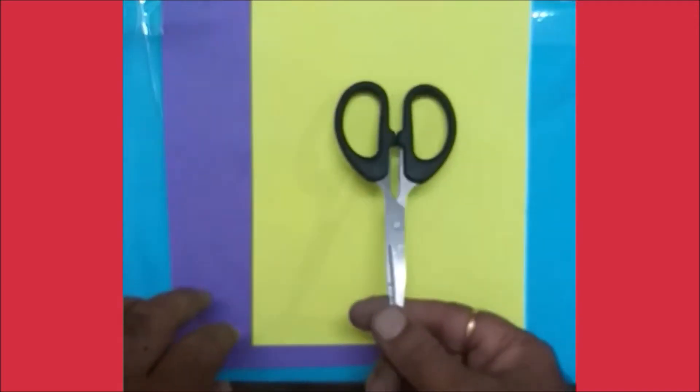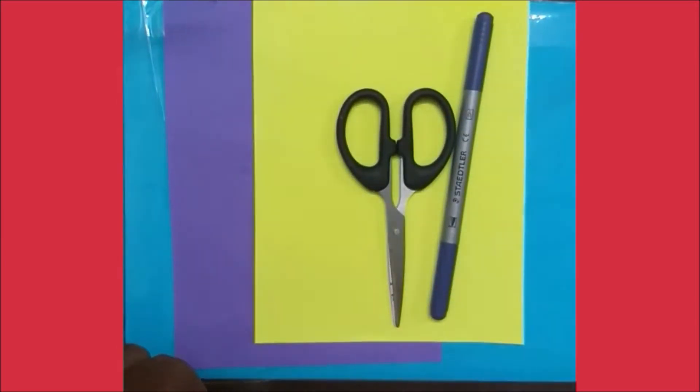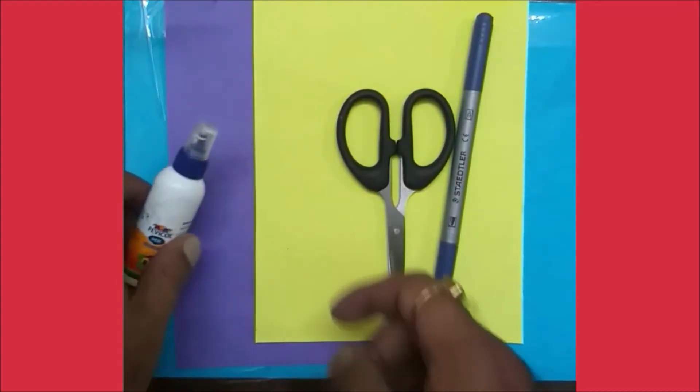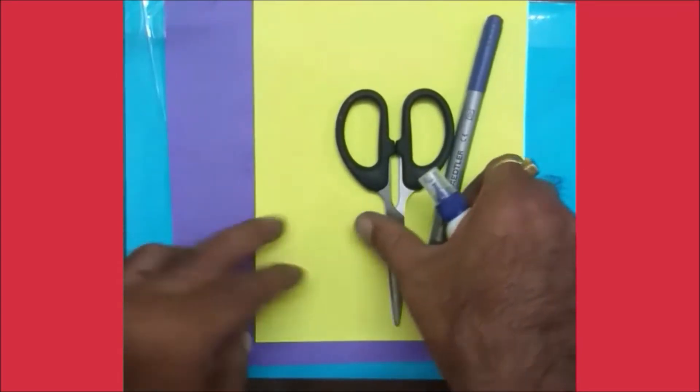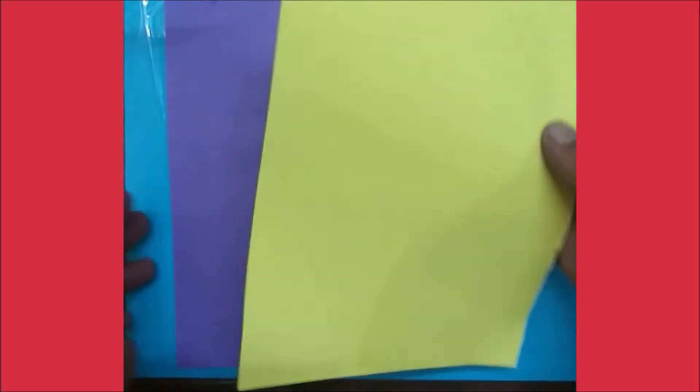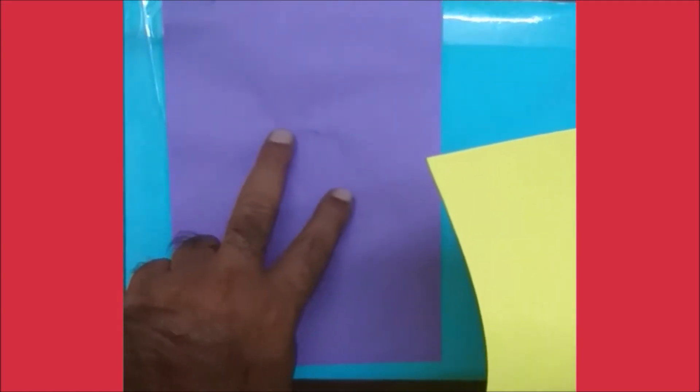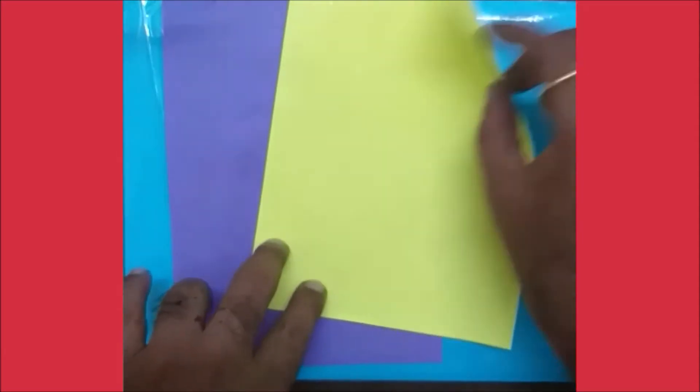Now we are going to start. Take the base paper where we are going to stick it. If you have a scrapbook, you can stick it on that. Now I'm going to turn it into a square.